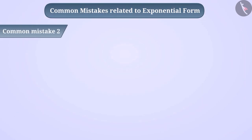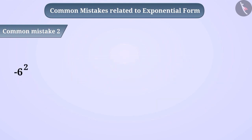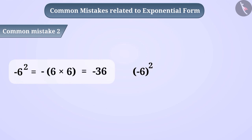Common Mistake 2: Some children ignore the brackets. They solve minus 6 raised to the power of 2 as minus 6 multiplied by minus 6 equals 36, but this is a misunderstanding. Remember that minus 6 raised to the power of 2 (without brackets) and minus 6 in brackets raised to the power of 2 are different. Minus 6 raised to the power of 2 equals minus of 6 times 6, which equals minus 36. Whereas minus 6 in brackets raised to the power of 2 equals minus 6 multiplied by minus 6, which equals 36.